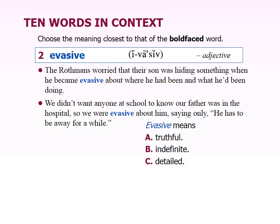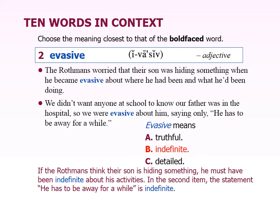The second word is evasive. Remember, this is an -IVE word which often signals that it's an adjective. 'The Rothmans worried that their son was hiding something when he became evasive about where he had been and what he'd been doing.' 'We didn't want anyone at school to know our father was in the hospital, so we were evasive, saying only he has to be away for a while.' And the answer to this is indefinite.